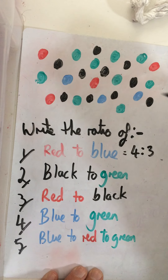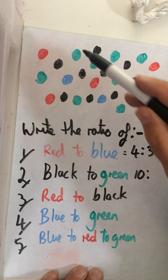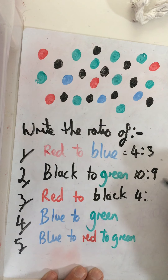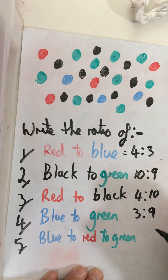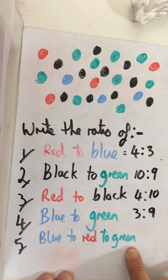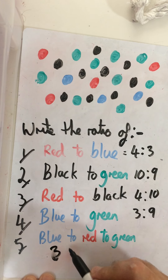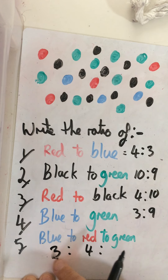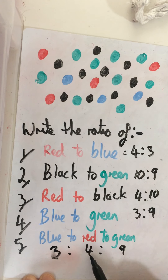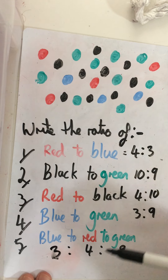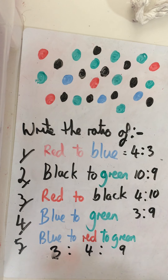Let's quickly go over the answers. Two, four, six, eight — so there are ten black. How many green? One through nine — two nine green. So we have four red to ten black, and three blue to nine green. Now this last one's a bit trickier but the same rules apply. How many blue? Three. How many reds? Four. How many greens? Nine. So it's three to four to nine. You can have a longer ratio — it can be more than two numbers; it can be three, four numbers and so on.